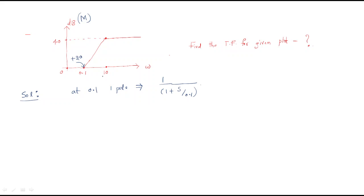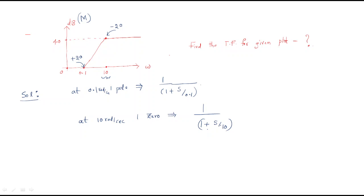At ω = 10 rad/s, a −20 dB/decade slope is added, meaning one pole is introduced there. So we have one zero at ω = 0.1 (written as 1/(1 + s/0.1) in pole form, or (1 + s/0.1) as a zero factor) and one pole at ω = 10, written as 1/(1 + s/10).